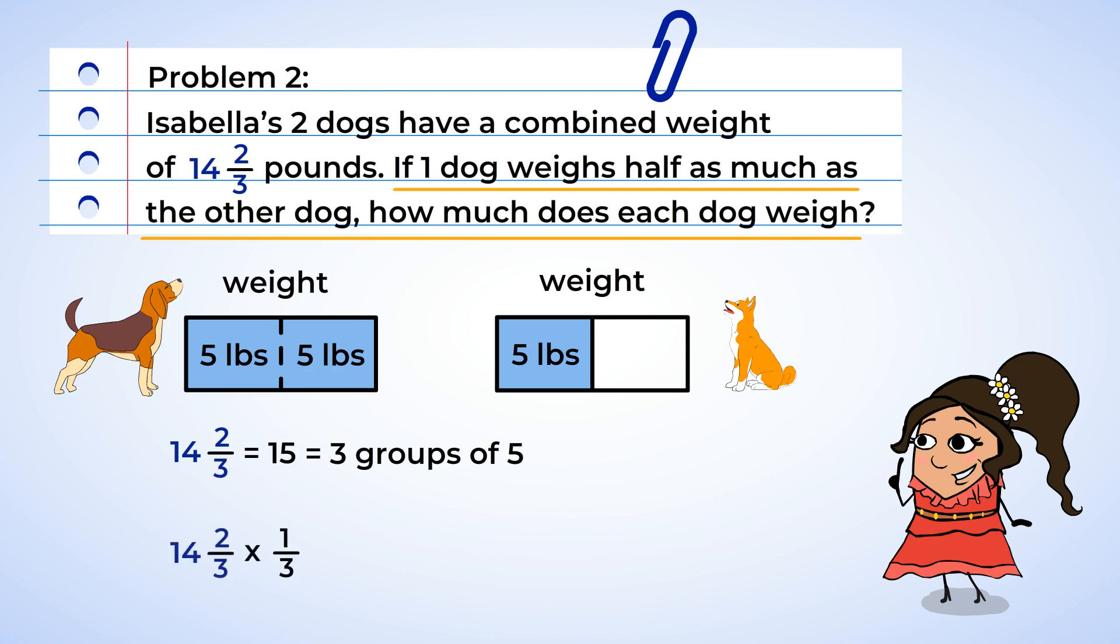Let's see how much their precise weight is, because precision is perfection. According to the diagram, we need to find one-third of 14 and two-thirds. Sounds fun. First, we need to change the mixed number into an improper fraction. So 3 multiplied by 14, well that's 42. Add 2 to get 44.